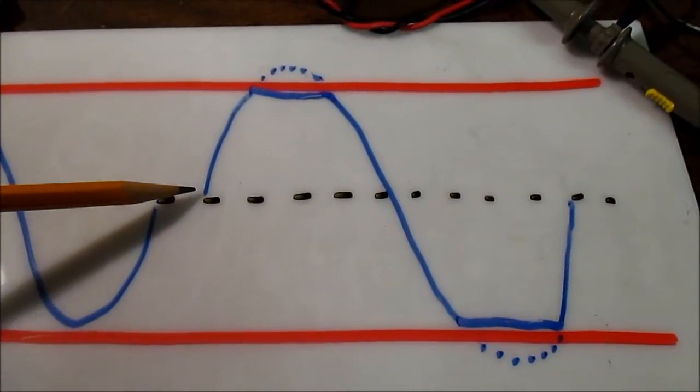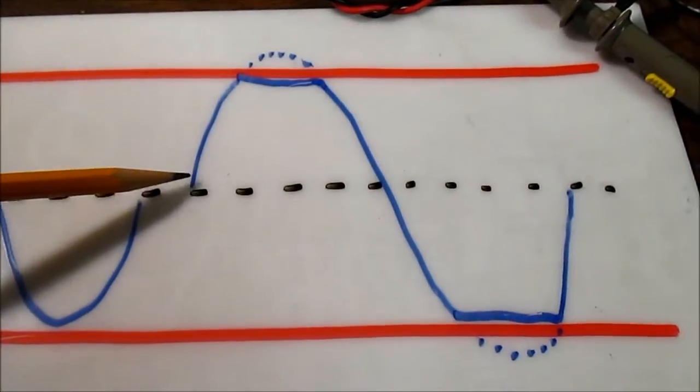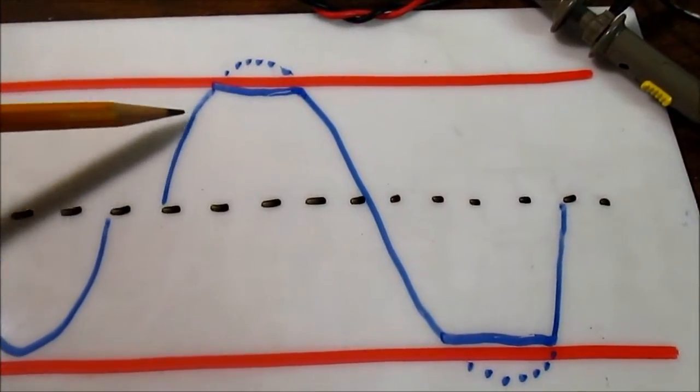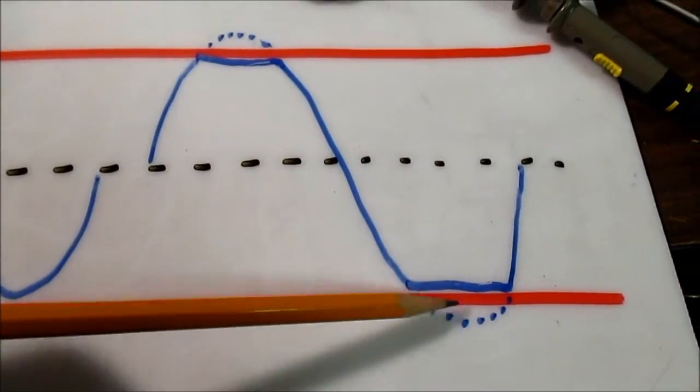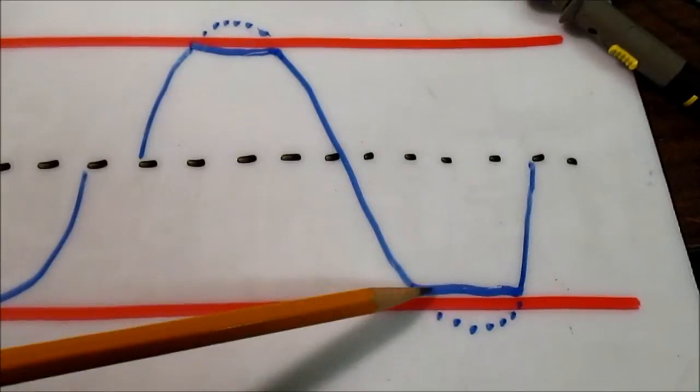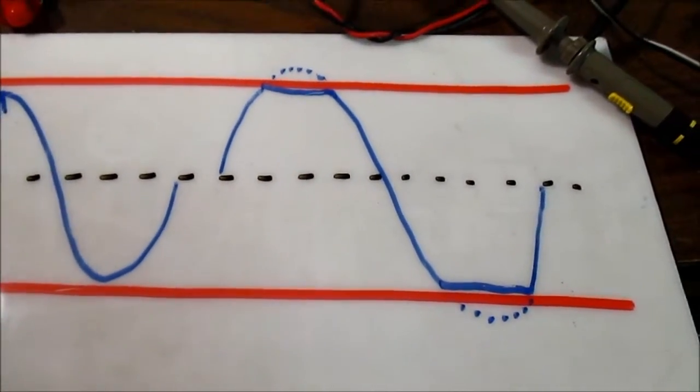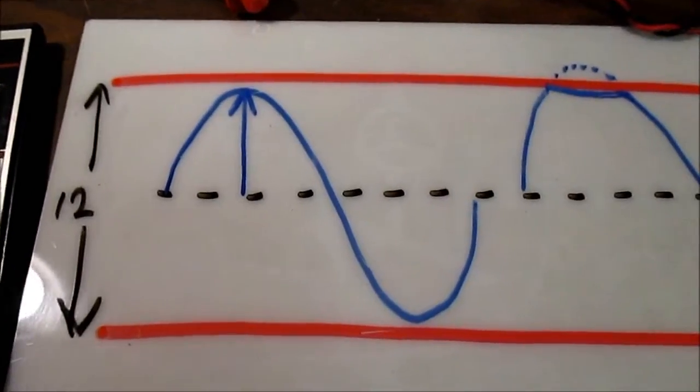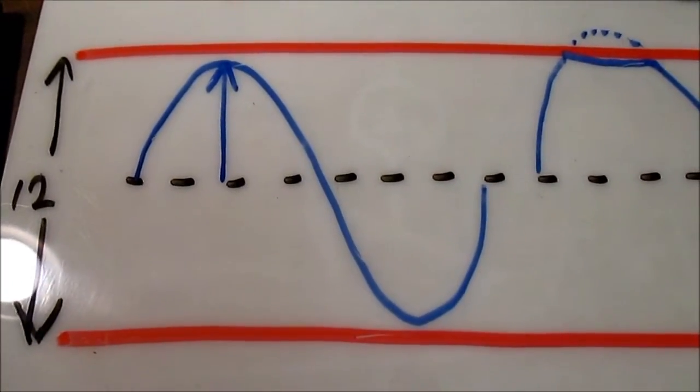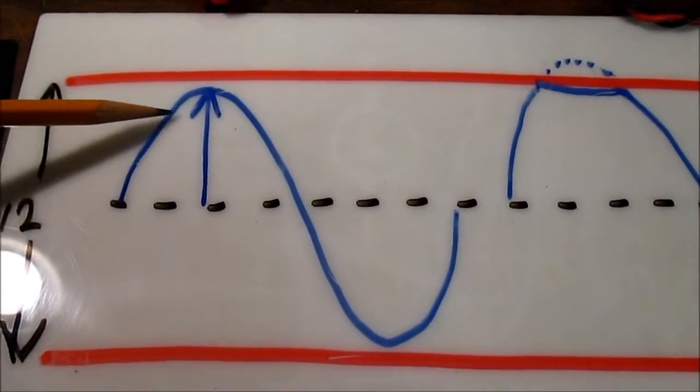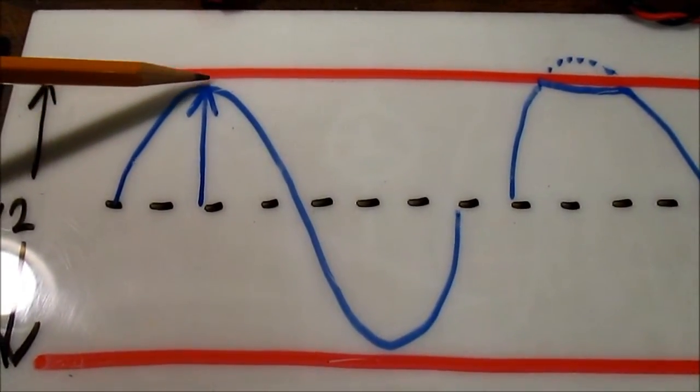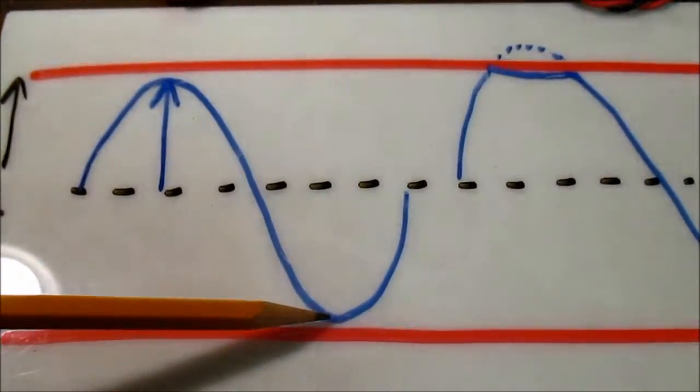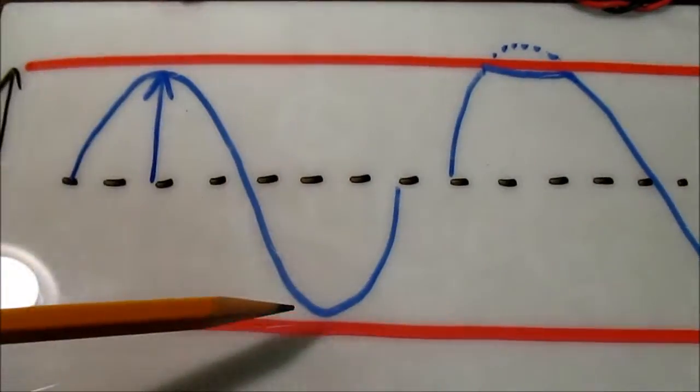Now, if you increase the input signal and force the amplifier to make its output even larger, you run into a condition known as clipping or overload, where it tries to swing beyond those rails but it can't. So it just flat tops the top and bottom of the waveform, and that gives you kind of a grungy, distorted sound.